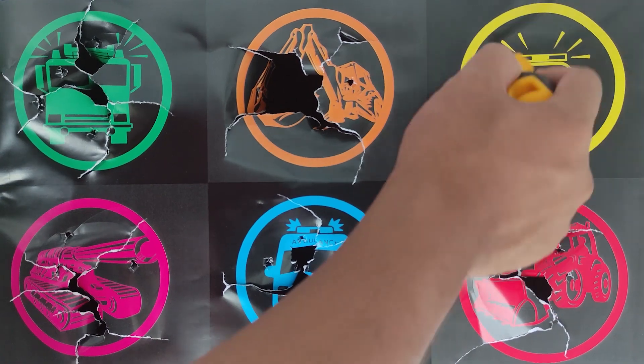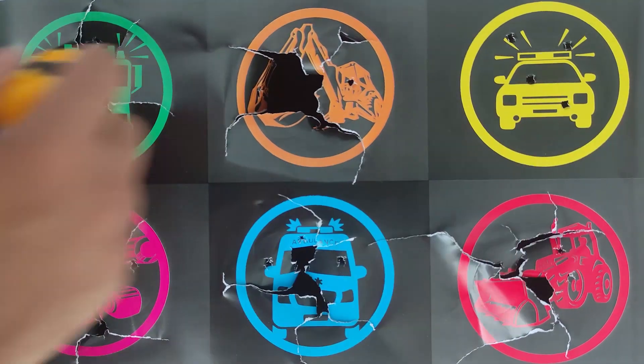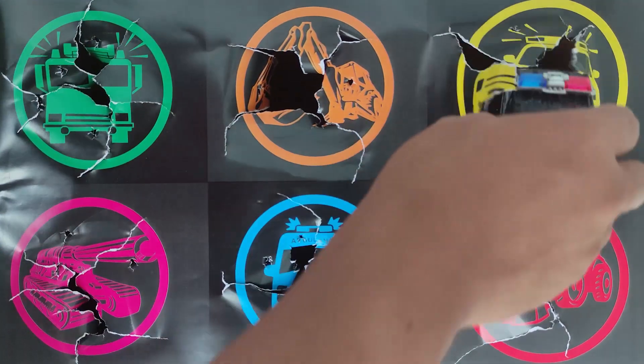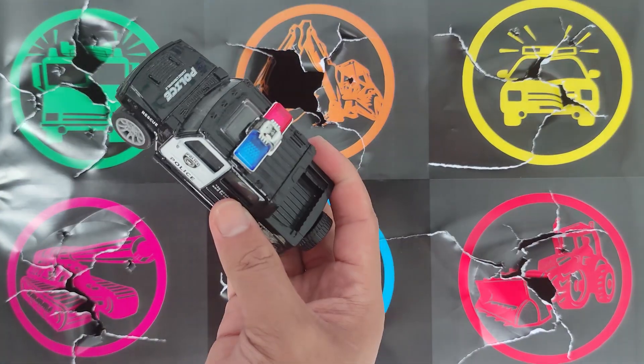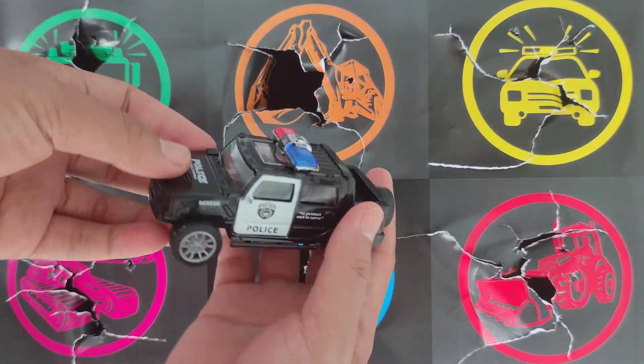Wow, yellow, kuning. Ini apa nih teman-teman? Wadidaw, lihat ternyata di sini ada mobil polisi.